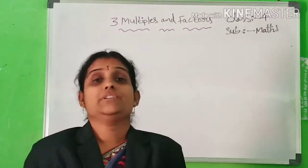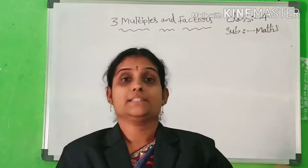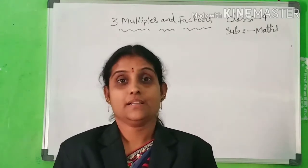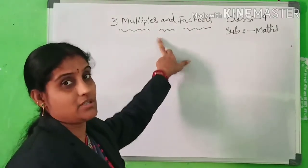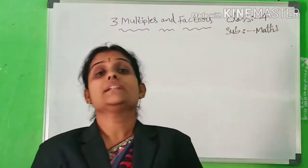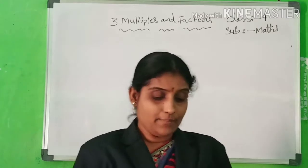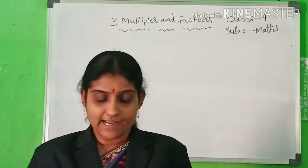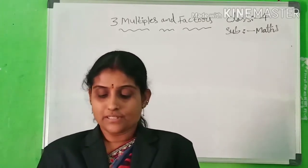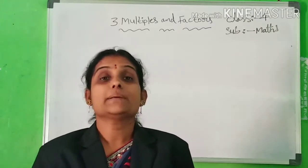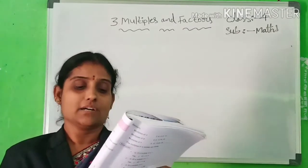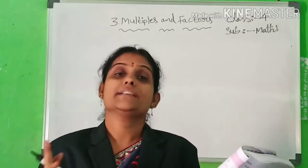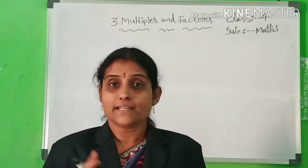Now, what is a multiple? Children, tell me. The products obtained by multiplying a number by 1, 2, 3, etc. are called the multiples of that number.